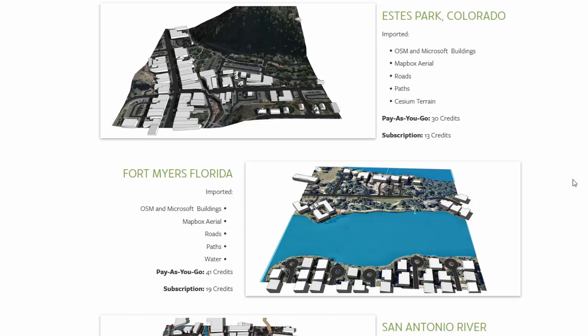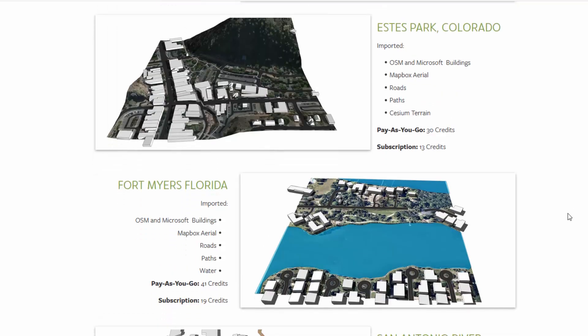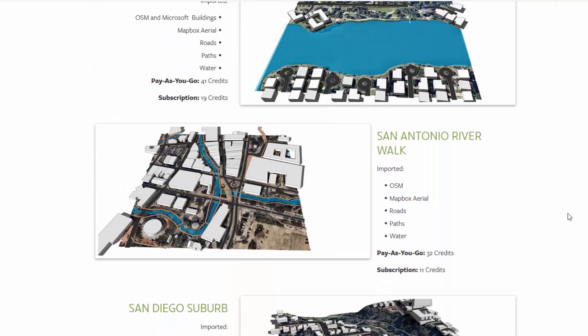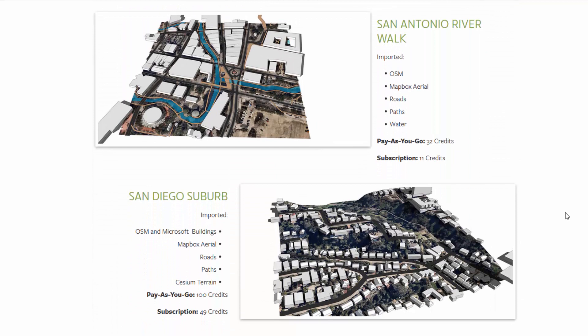Fort Myers, Florida: pay-as-you-go 41 credits versus 19 credits with the subscription. The San Antonio Riverwalk included OpenStreetMap buildings, Mapbox aerials, roads, paths, and water — costs 32 credits using pay-as-you-go and 11 credits with the subscription.